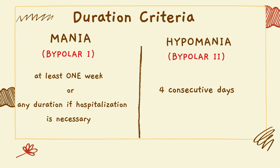The duration criteria for mania is at least one week — the person must demonstrate symptoms for at least one week, or any duration if they were hospitalized or detained due to disruptive behavior. For hypomania, the change from previous behavior with expansive and irritable mood and high energy must last at least four days or more.